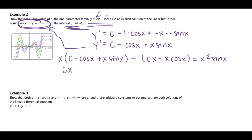Here I get cx minus x cosine x plus x squared sine x. I'm going to distribute the negative and get negative cx plus x cosine x. And I want to verify that it is equal to x squared times sine x.